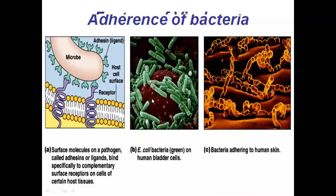Here is the diagram. This is the microorganism and these structures are called adhesins, which are nothing but the ligands. This is the cell membrane or plasma membrane of the host organism, and there is a presence of these specific blue-colored structures which are called receptors. A special reaction takes place between these adhesins or ligands and these receptors present on the plasma membrane of the host cell.